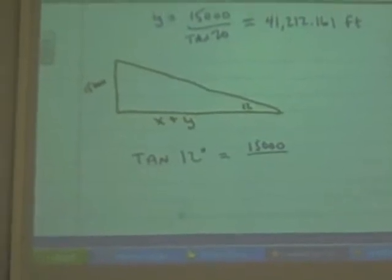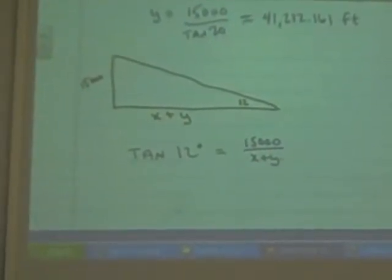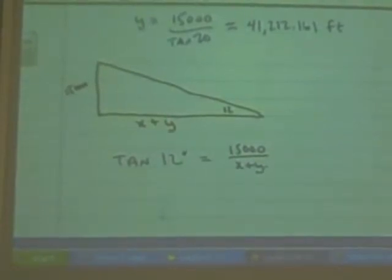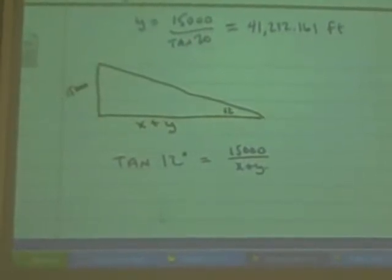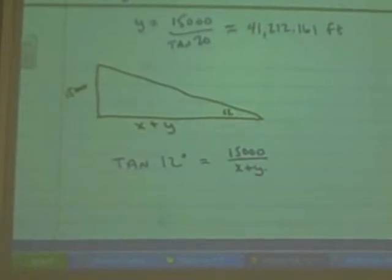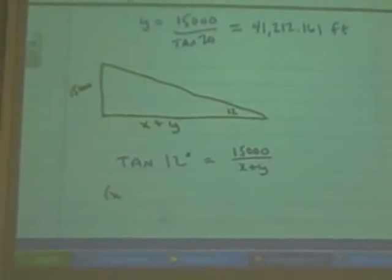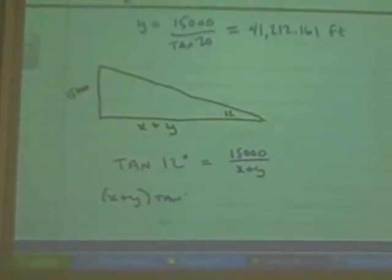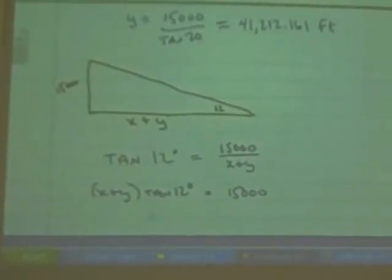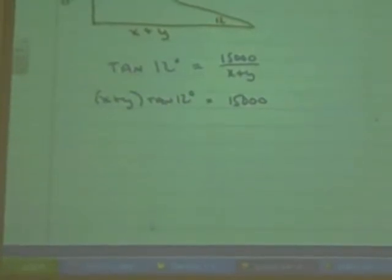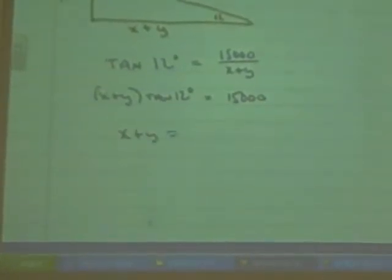There you go. Okay. What am I going to do to solve this one for x? Multiply x by x plus y. That's the denominator. Okay? That's going to give me x plus y times tangent 12 degrees equals 15,000. Then what can I do? Divide by tangent 12. That gives me x plus y equals 15,000 over tangent 12. Then what do I need to do?